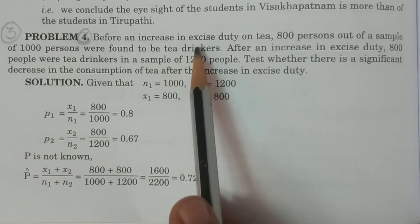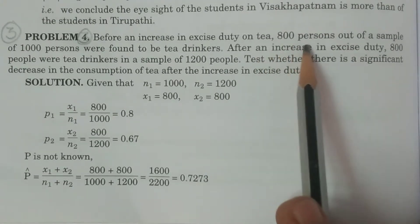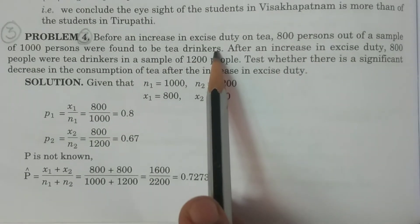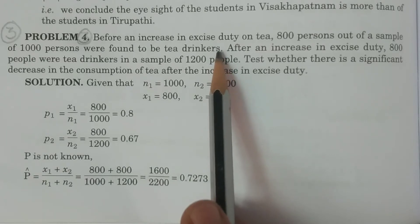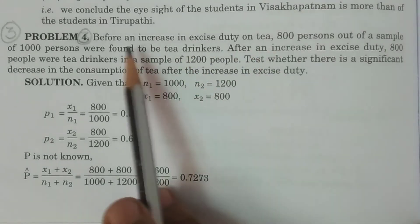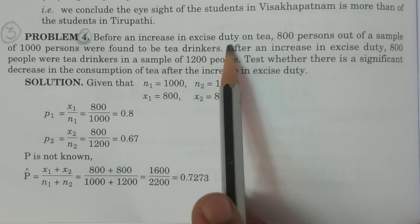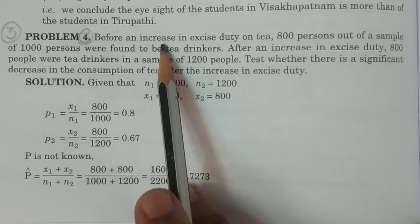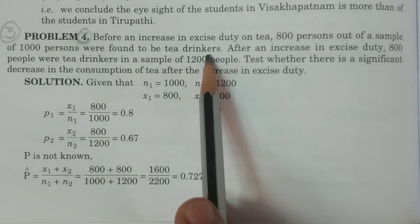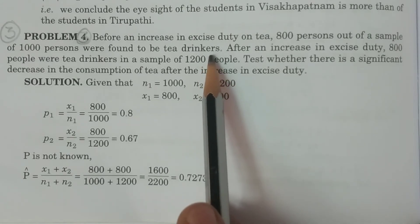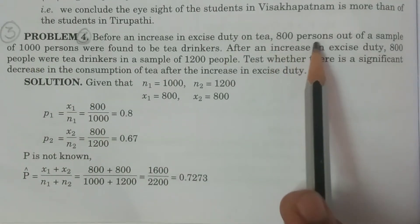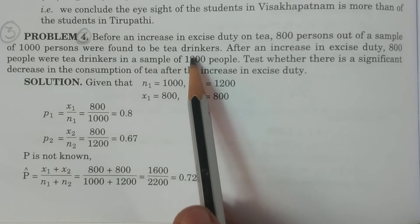Before an increase in excise duty on tea, 800 persons out of a sample of 1000 persons were found to be tea drinkers. We can consider n1 is 1000, out of which x1 is 800 persons who consume tea.